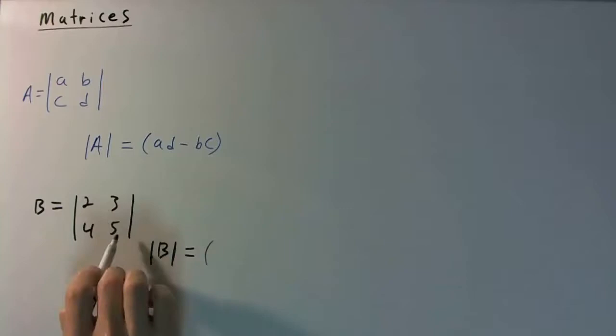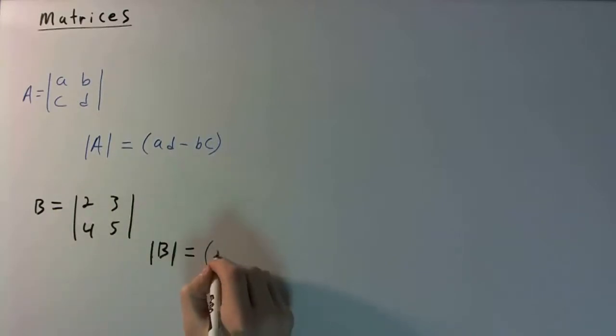So we'll have, again, top left times bottom right, so 2 times 5, and then we subtract from that 3 times 4, right?